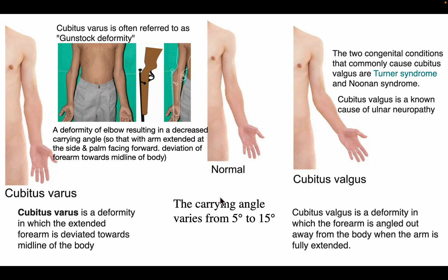The normal carrying angle is 5 to 15 degrees. Cubitus varus is a deformity in which the extended forearm is deviated towards the midline of the body, meaning the carrying angle is decreased. Cubitus varus is also known as gunstock deformity — a deformity resulting in a decreased carrying angle such that with the arm extended and the palm facing forwards, the forearm deviates towards the midline of the body.